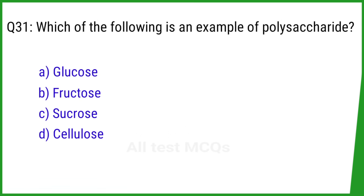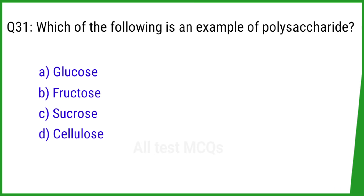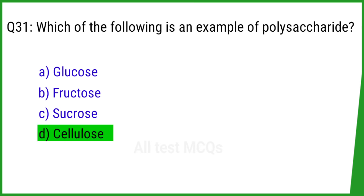Question number 31. Which of the following is an example of a polysaccharide? The correct answer is option D: Cellulose.